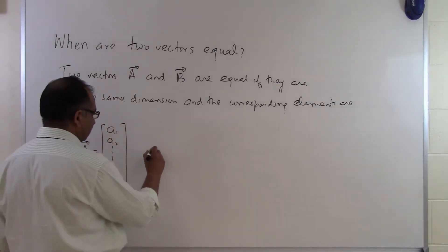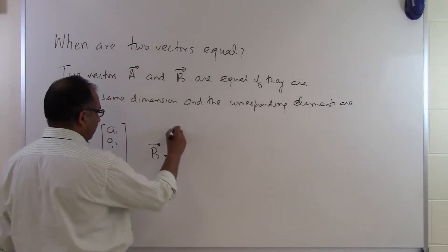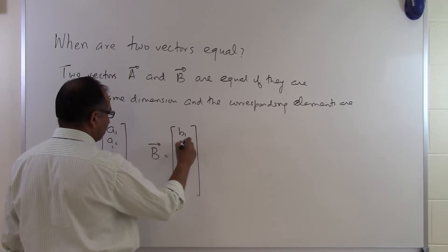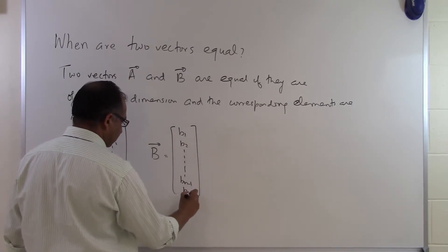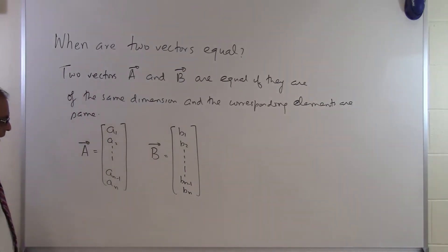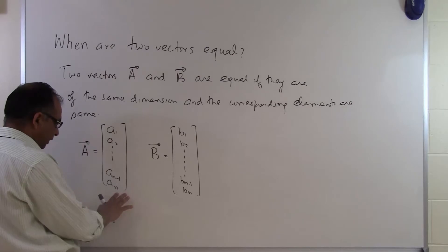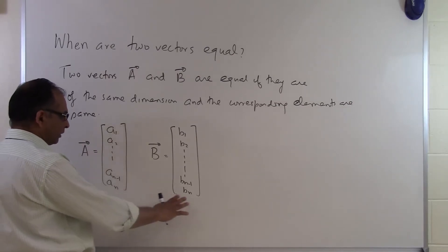Then I got another vector called B and it has B1, B2, all the way up to Bn-1, Bn, so I got n entries in B. So now we do have same number of entries in A and same entries in B.